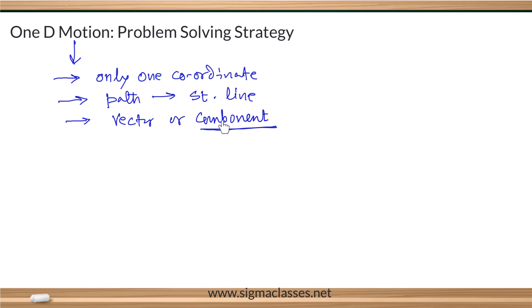The component of a vector can be positive, negative, or zero. Whether the component is positive or negative depends on which direction you are taking as the positive axis — the positive x-axis, y-axis, or z-axis. So the component depends on the choice of axis.